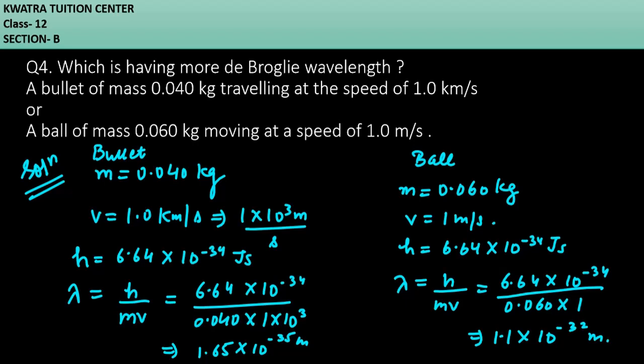So you can see that the ball has more wavelength, de Broglie wavelength. So yes, that's your answer. This one has more wavelength, second one. Now we'll be moving to the next one, which is the fifth question.